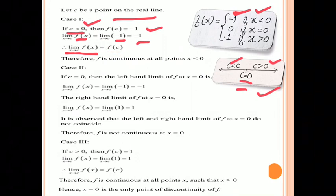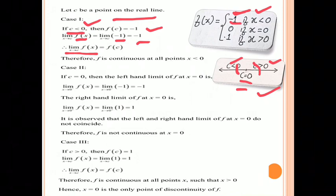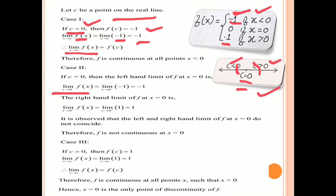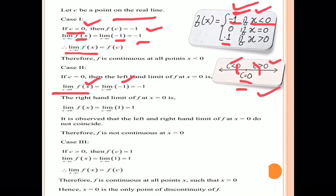Case 2: if c equals 0. In the neighborhood of c = 0, to the left the value of f(x) is −1, and to the right the value is 1. So we need to find both the left-hand limit and right-hand limit. The left-hand limit — limit x approaches 0 negative of f(x) — equals −1, since for x < 0 f(x) = −1.